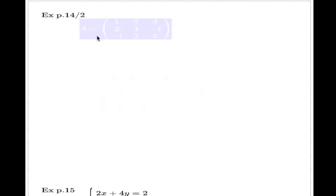So on that page, page 14, example number 2, you have a matrix like this: 1, 6, 4, 2, 4, negative 1, negative 1, 2, 5.